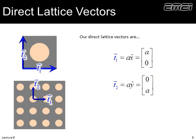The first step is the direct lattice vectors. We have a square lattice, so the primitive translation vectors just point along the edge of the unit cell. We have T1 and T2, and given lattice spacing A, here's how we would express our T1 and T2. I'm showing T1 and T2 in the middle of an extended lattice, so we can write just from observation. That's pretty simple.